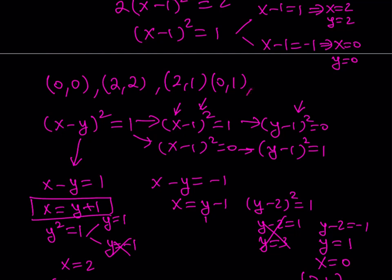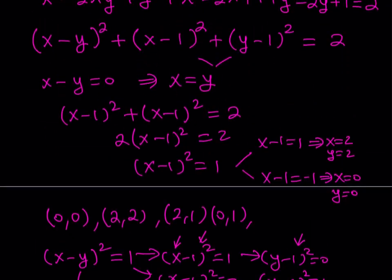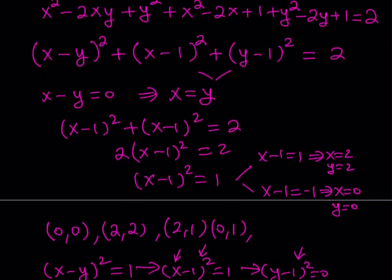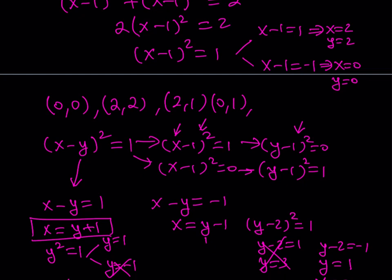None of the values of x or y can exceed 2, because if x or y is greater than 2, then x minus 1 or y minus 1 would be greater than 1, making its square exceed 1, which is impossible. This limits our options. Combining all cases, the complete set of integer solutions is: 0 comma 0, 2 comma 2, 2 comma 1, 0 comma 1, 1 comma 2, and 1 comma 0 — a total of 6 solutions.